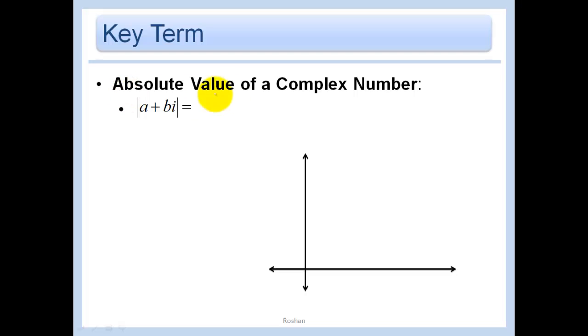Now how do I find the absolute value of a complex number? Remember that absolute value was defined before as the distance from 0 on the number line. So in this case, my 0 is actually going to be my origin. And instead of a number line, I'm going to be on this complex plane. And so, again, this is a distance.